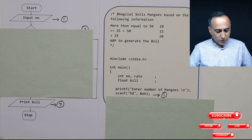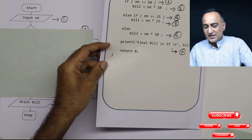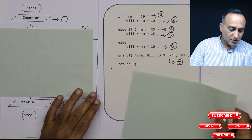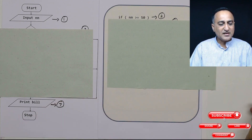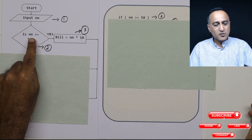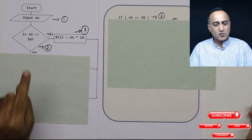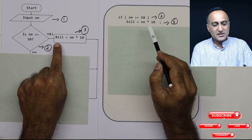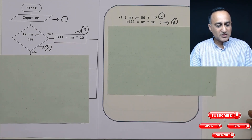Now we're going to continue with the next step. The next step in the flowchart is going to ask a decision: is the number of mangoes greater than or equal to 50? It can be either yes (true) or no (false). When it is yes, bill is calculated as number of mangoes multiplied by 10.